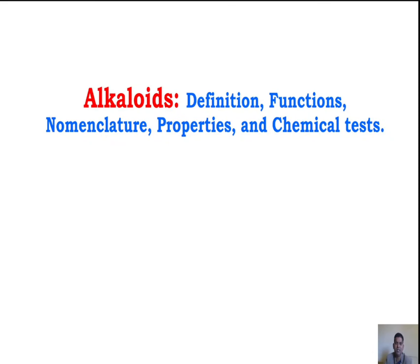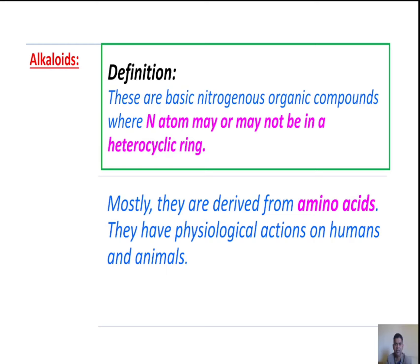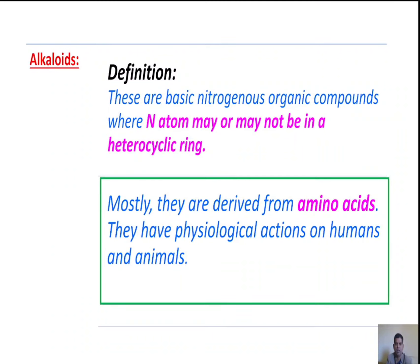Hi friends, welcome to Pharma Classics. I am Dr. JP. Today we are going to discuss the introduction of alkaloids. Alkaloids are basic nitrogenous organic compounds where the nitrogen atom may or may not be in a heterocyclic ring. Mostly alkaloids are derived from amino acids. They have physiological actions on humans and animals.